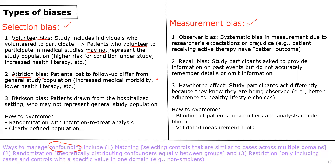The third type we're going to talk about is Berkson bias. This is when patients are drawn from a hospitalized setting, which can lead to selection bias because hospitalized patients may not represent the general study population. For example, if we're looking at the impact of aspirin on risk of MI and we sample patients hospitalized for an MI, that might not give us an accurate indication of aspirin's impact on MI risk in the general population. Those are the three main types of selection bias to be on the lookout for.